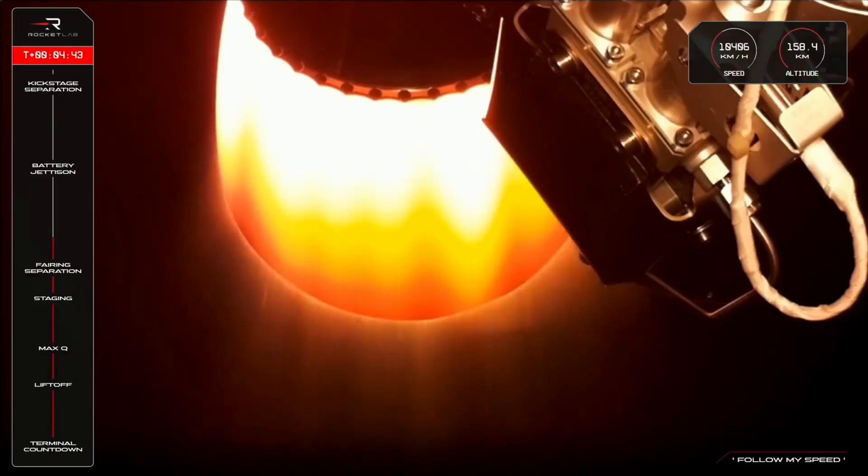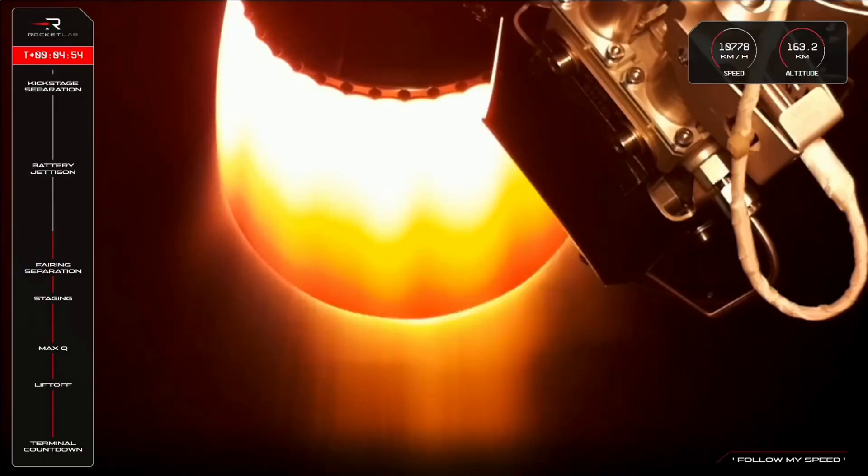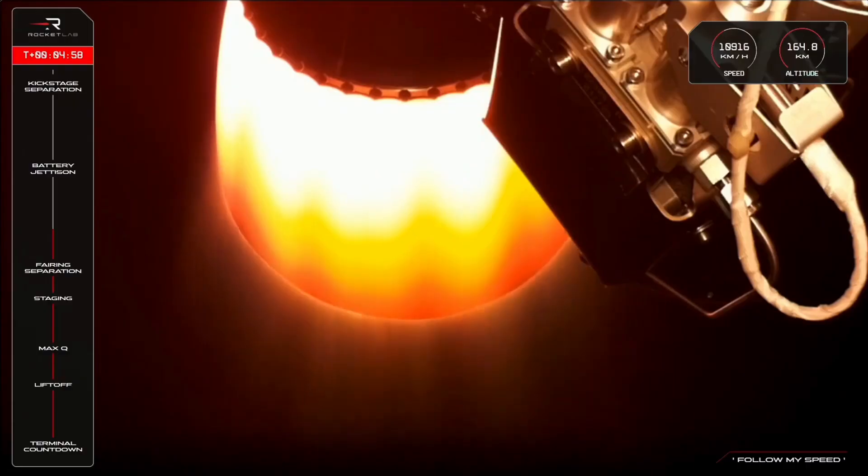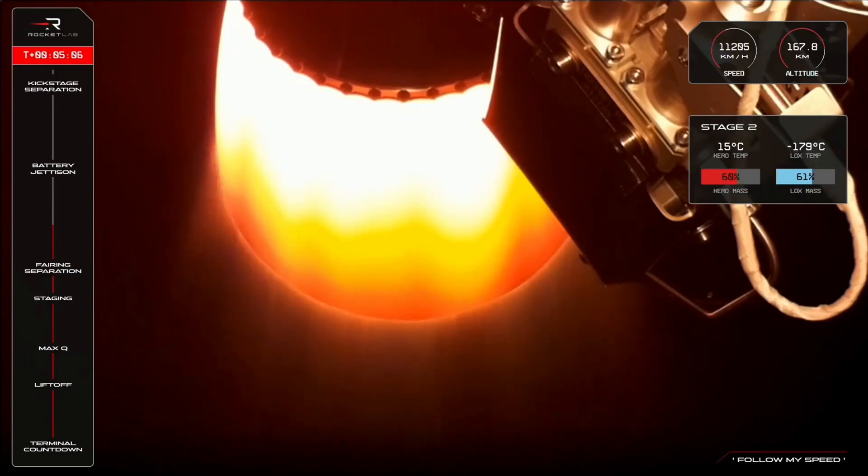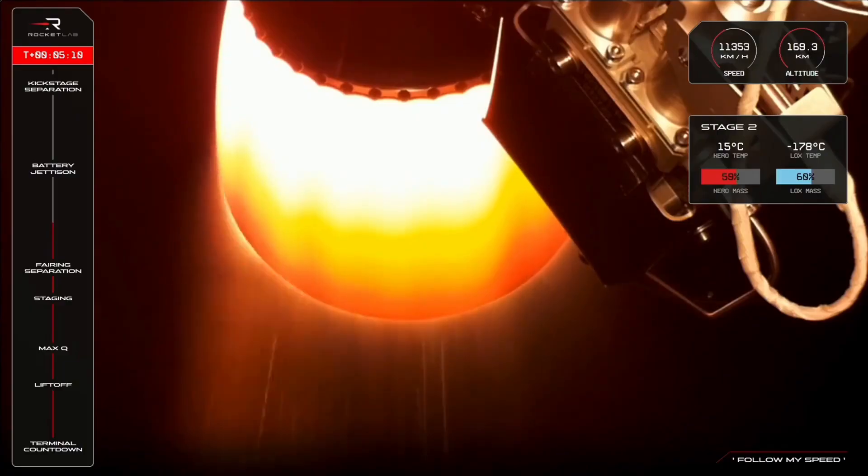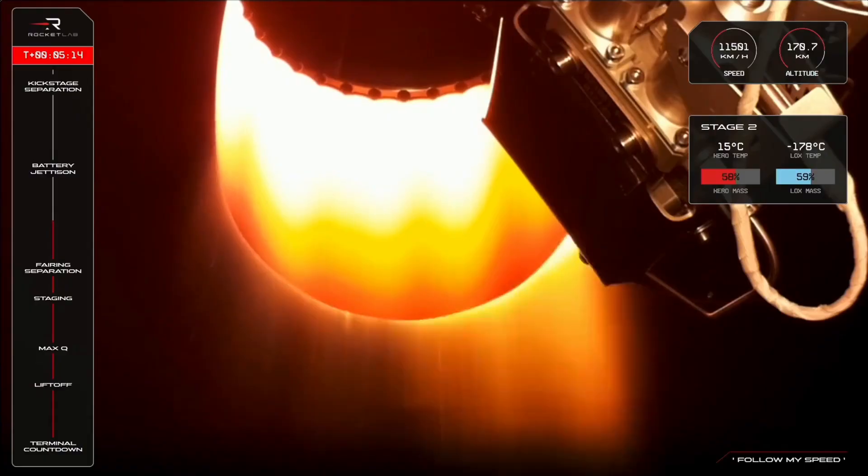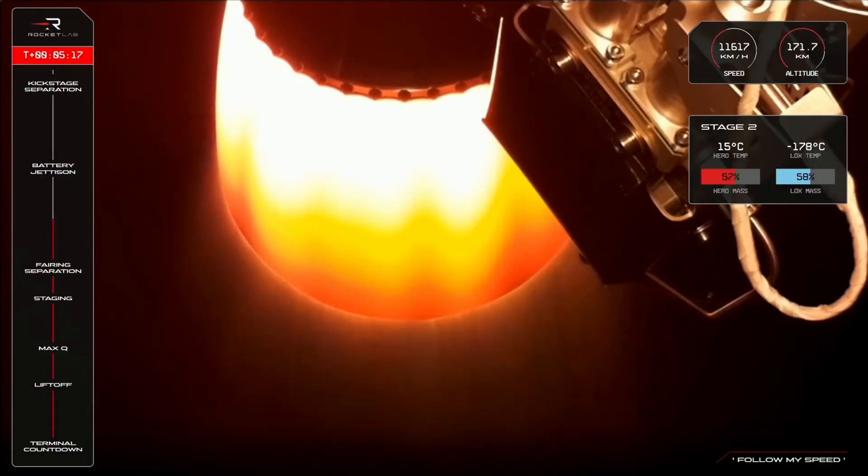Stage two propulsion holding nominal. T plus 5 minutes 16 seconds now and those tank levels are looking good as Electron's continuing well past 173 kilometers above Earth at a speed of, look at that, almost 12,000 kilometers an hour, so battery hot swap will be coming up shortly. Let's listen in for that one. Guidance is nominal, 200 seconds remaining.